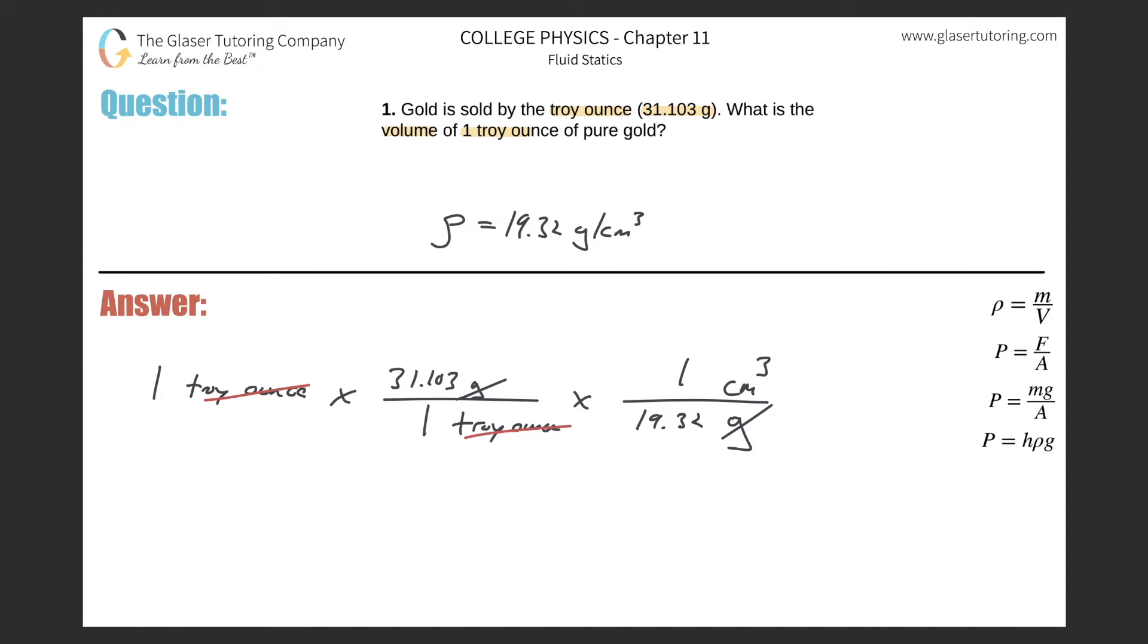31.103 divided by 19.32 gives us a value of about 1.610. How many sig figs should we have? Probably about four significant figures. This will be in cubic centimeters.